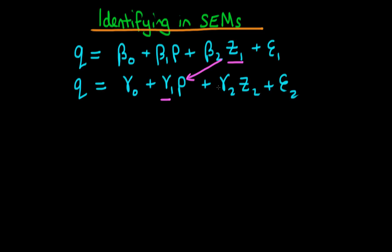Similarly, because I've added in this further variable z2, we can use z2 as an IV for P in the first equation, because z2 is an exogenous variable which doesn't occur in the first equation but does occur in the second equation. So under this setup we are able to identify all parameters.